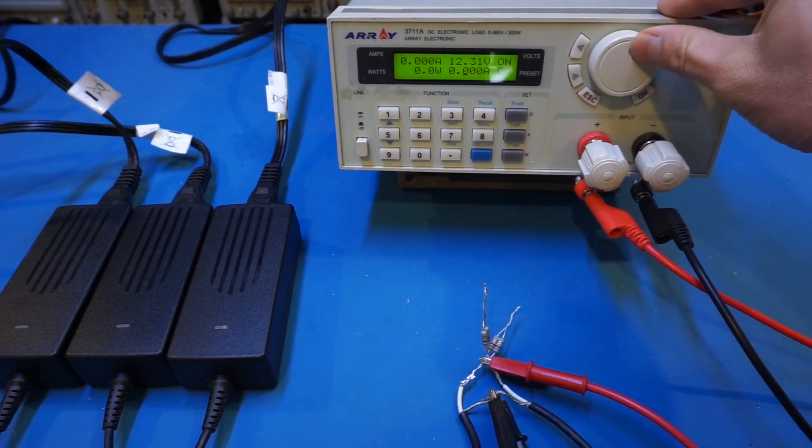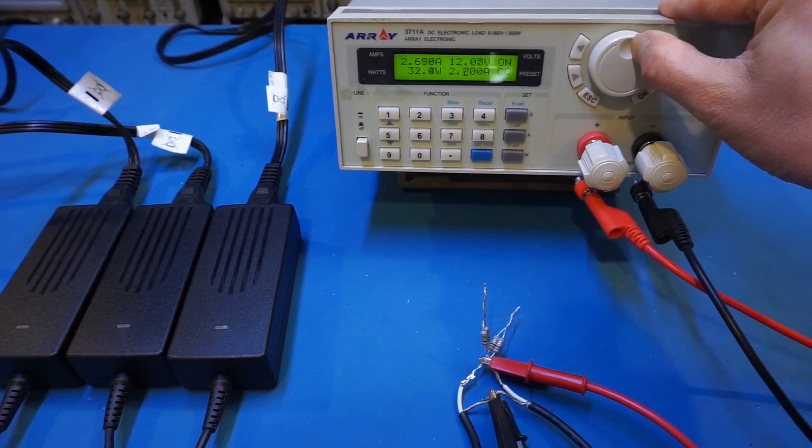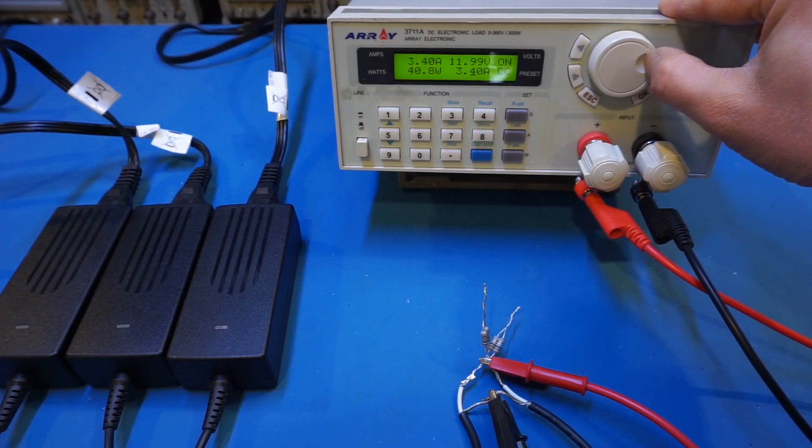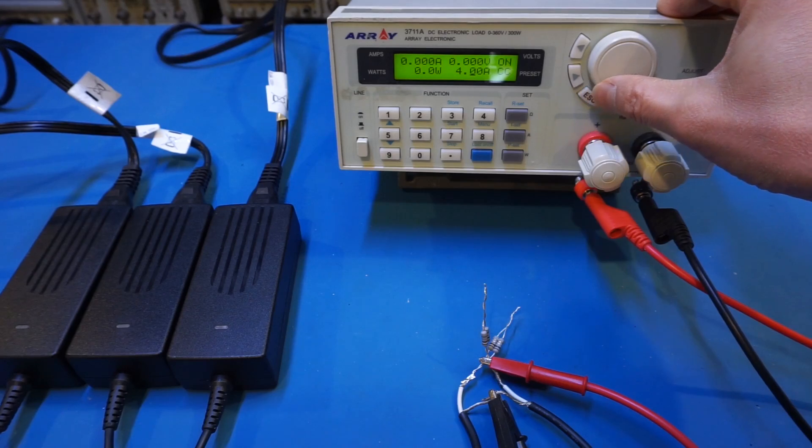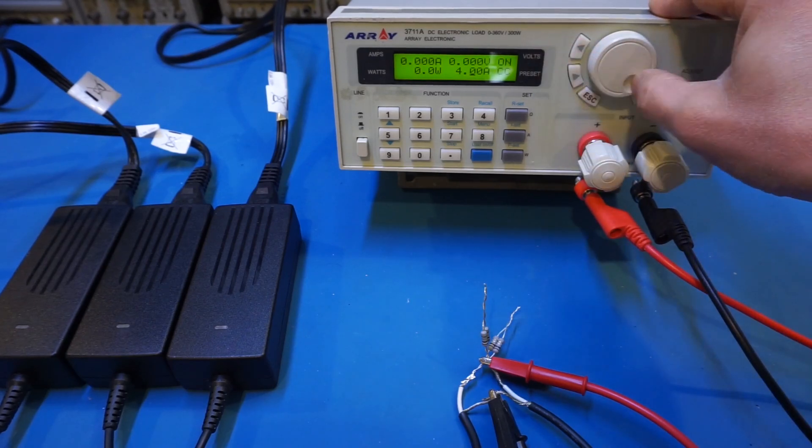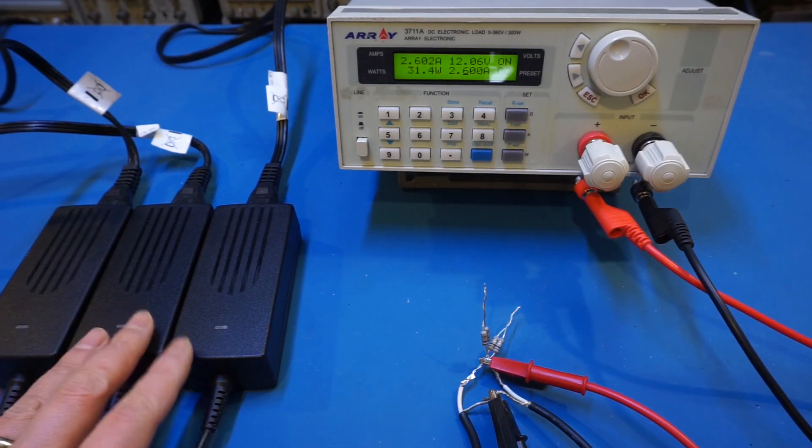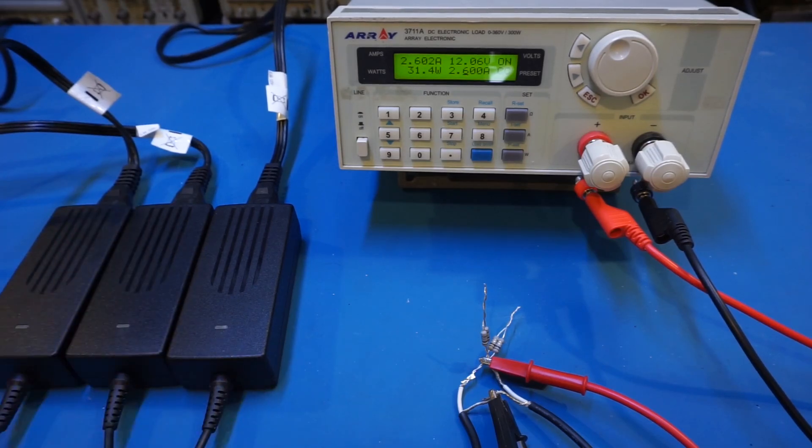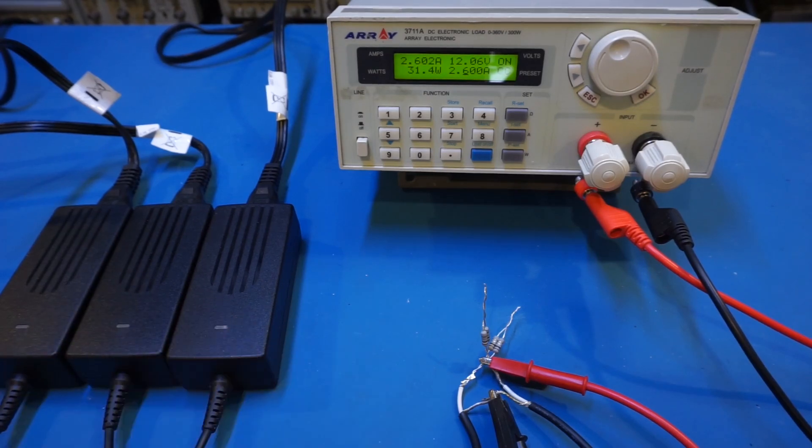Right now we're approaching the limit of one single power brick, which is 3.5 amps. Now let's start increasing. You will see once we hit the four amps, which is actually the really upper limit of a single power brick, the output started to drop out. The reason is that these power supplies have a very tight regulation and the output barely changes throughout the current range. So it is impossible for them to correctly balance themselves out without this current sharing resistor.